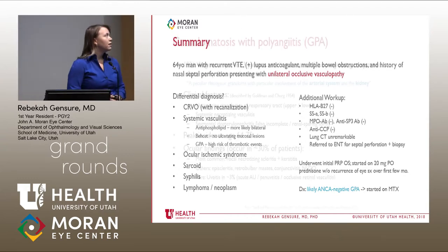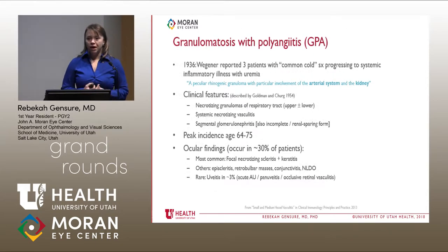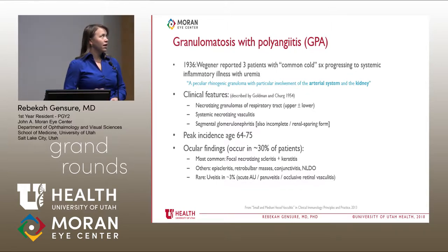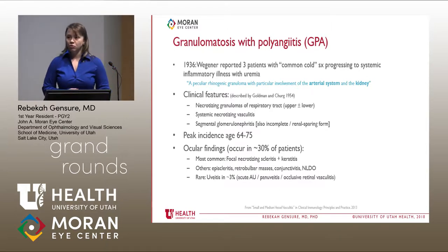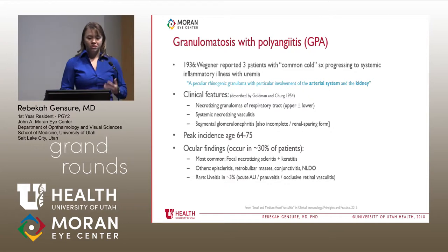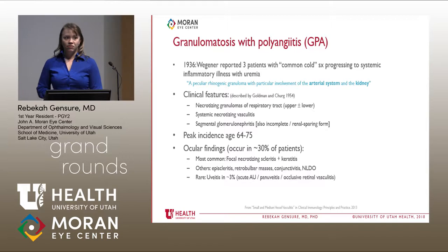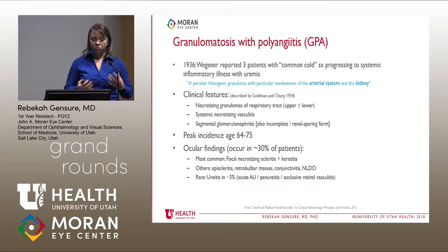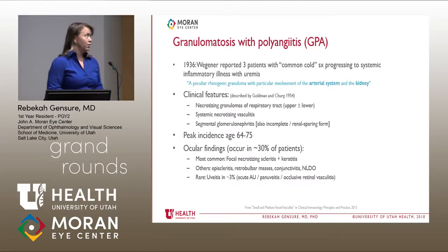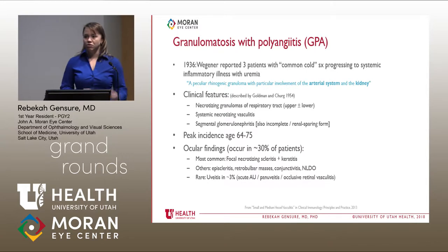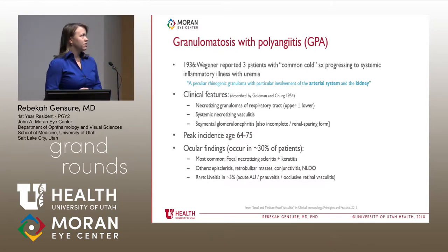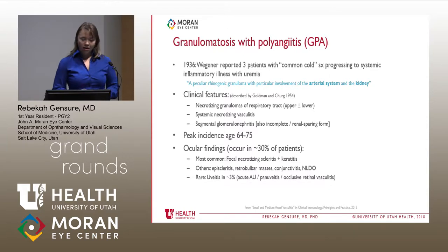I'd like to discuss GPA — granulomatosis with polyangiitis, formerly known as Wegener syndrome. Wegener identified patients in the 1930s presenting with common cold symptoms that progressed to systemic inflammatory illness with uremia. The term was coined in the 1950s by Goldman and Churg. Clinical features include necrotizing granulomas in the upper and lower respiratory tract, systemic necrotizing vasculitis, and segmental glomerulonephritis in the kidney.